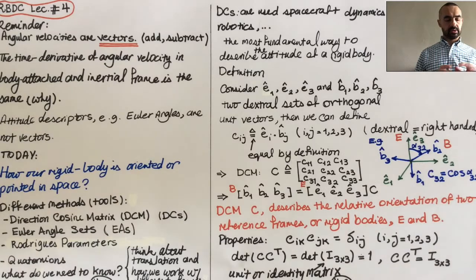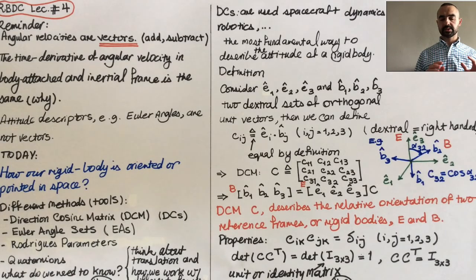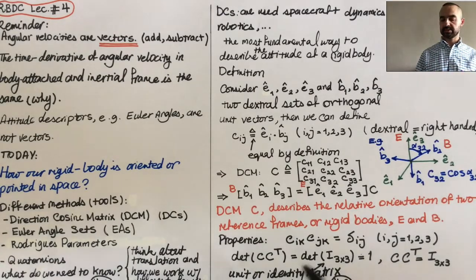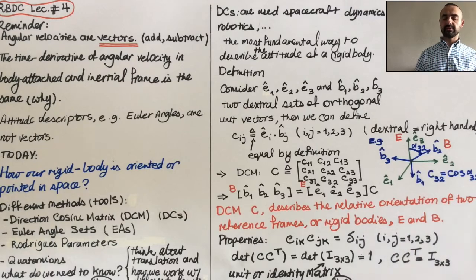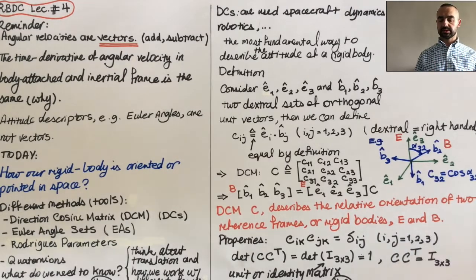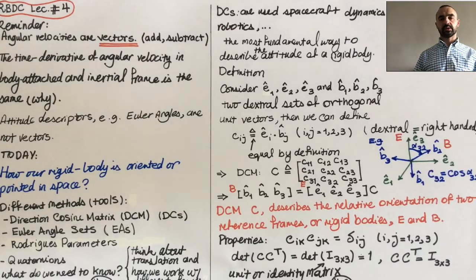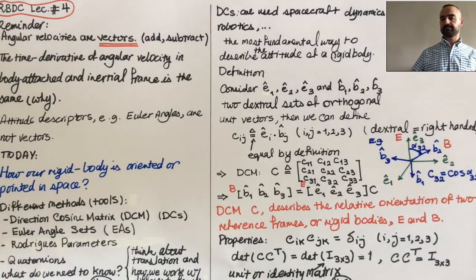So that's about the definition of direction cosine matrix, and then I'll come back to this direction cosine matrix and explain further what's going on. Thanks for paying attention.